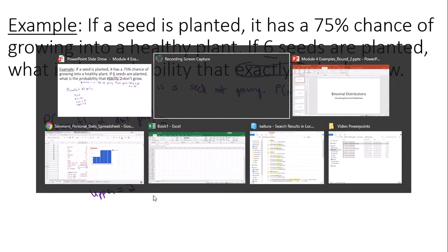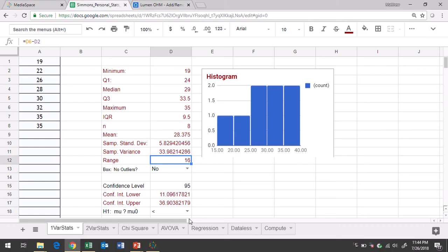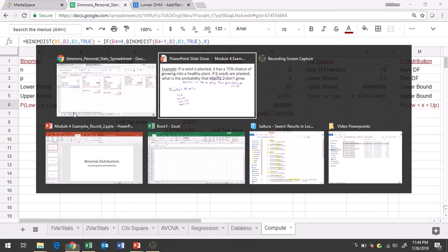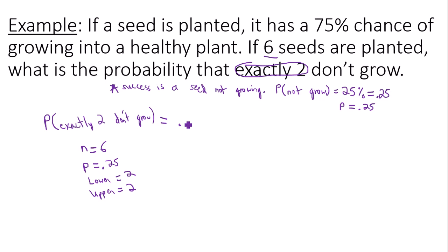So go to Google Sheets, go to the compute tab. Once you're there, you go to the binomial region. You type in your number of trials which is six, probability of a success which is 0.25, and then lower and upper bound are both two. In this case you get 0.2966. So the answer is 0.2966, so that is the probability that exactly two seeds do not grow.